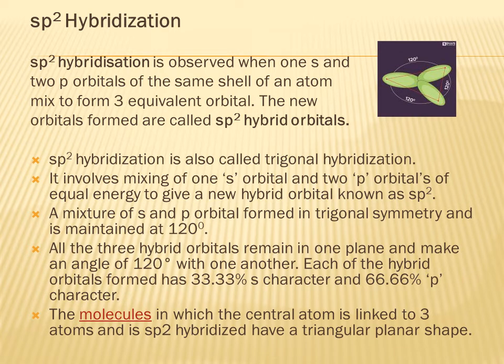Next is sp2 hybridization. sp2 hybridization is observed when one s and two p orbitals of the same shell of an atom mix to form three equivalent orbitals called sp2 hybrid orbitals. sp2 hybridization is also called trigonal hybridization, as the diagram shows. It involves mixing of one s orbital and two p orbitals of equal energy. A mixture of s and p orbitals forms a trigonal symmetry maintained at 120 degrees, with all three hybrid orbitals remaining in one plane.